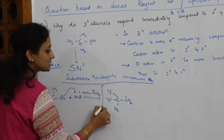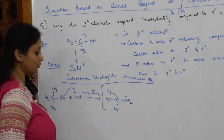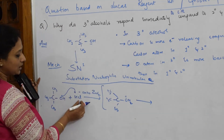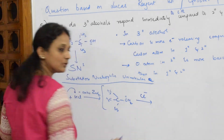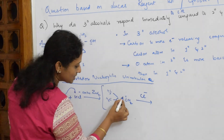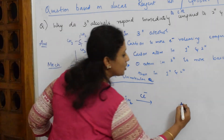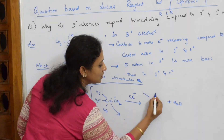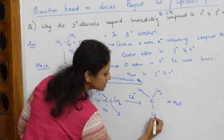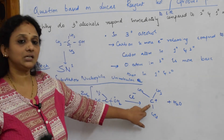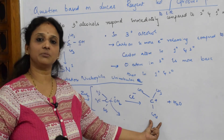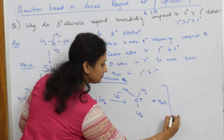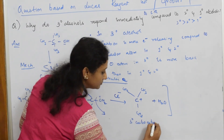Now the Cl- is still present. Before Cl- attacks, there is a cleavage of the C–O bond and the water molecule leaves — removal of water. What is left is CH3, CH3, CH3 on a positively charged carbon: tertiary carbocation formation. This is the most stable carbocation — tertiary is most stable, more stable than secondary, more stable than primary.